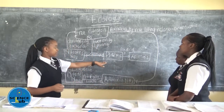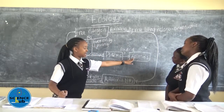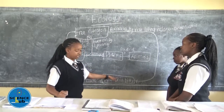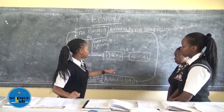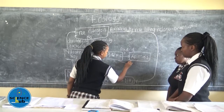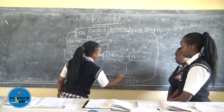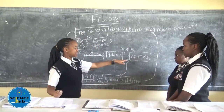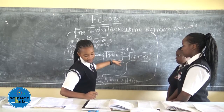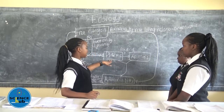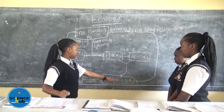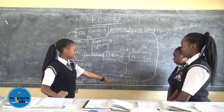There is also another way whereby plants and animals can directly convert into ammonia. This is whereby, when plants and animals die, they decay by saprophytic bacteria and fungi. So when plants and animals convert directly into ammonia, that simply means they have decayed by saprophytic bacteria.